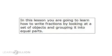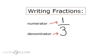Mathematicians, in this lesson you are going to learn how to write fractions by looking at a set of objects and grouping it into equal parts. You know that when we talk about fractions, we are talking about equal parts, and when we write fractions, we write the numerator — just the part we are thinking about — over the denominator, the total number of parts. Often we talk about fractions when we are breaking shapes into equal parts, but we can also talk about fractions when we have a set or a group of similar things.